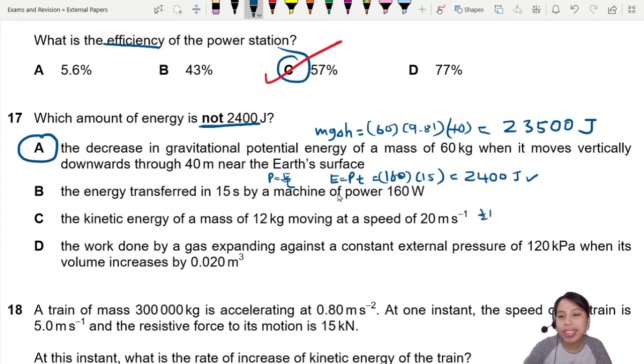C, kinetic energy. Okay, so we gotta go half mv squared. Plug in everything we know: mass of 12 kg moving at 20 meters per second.